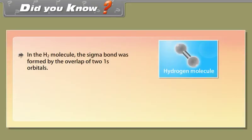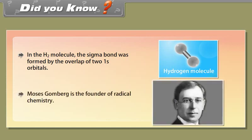Did you know? In the hydrogen molecule, the sigma bond was formed by the overlap of two 1s orbitals. Moses Gomberg is the founder of radical chemistry.